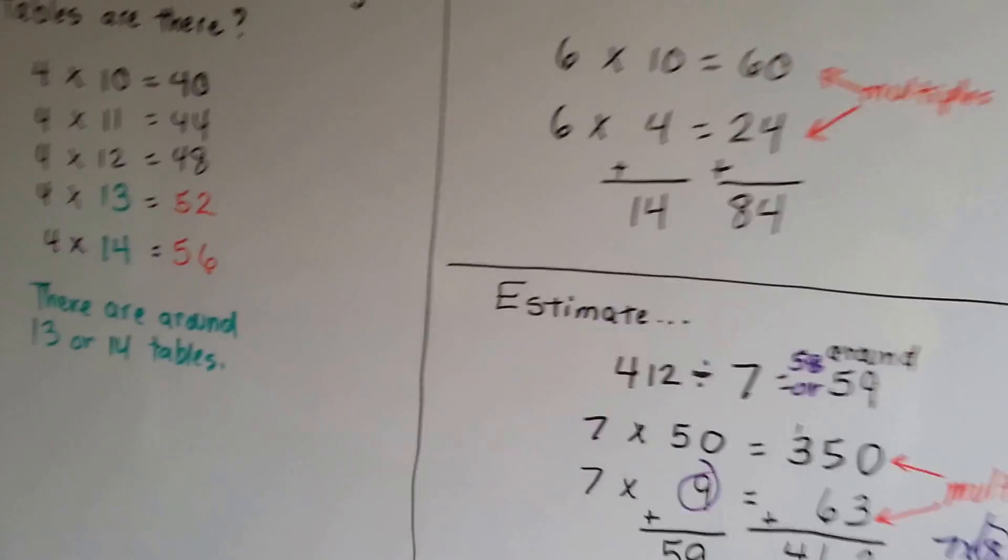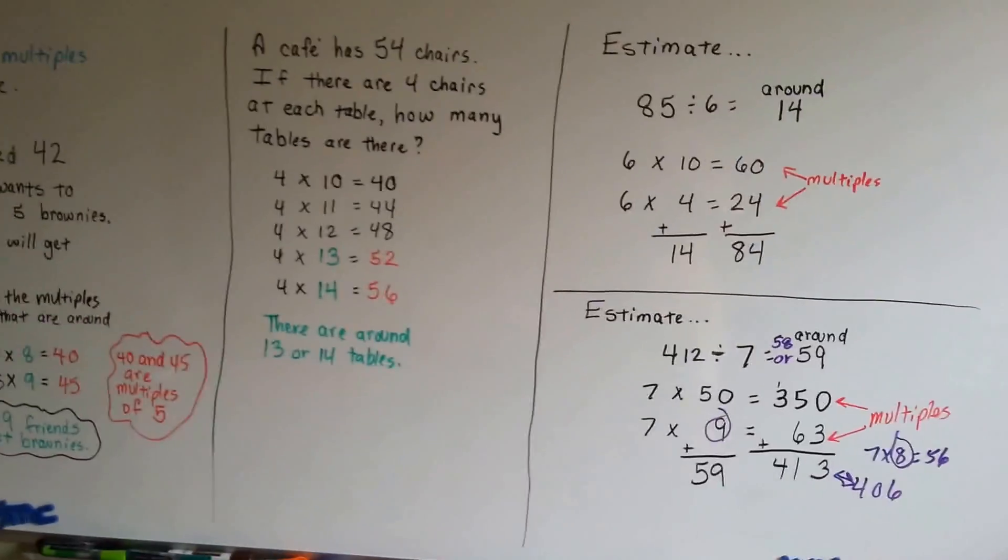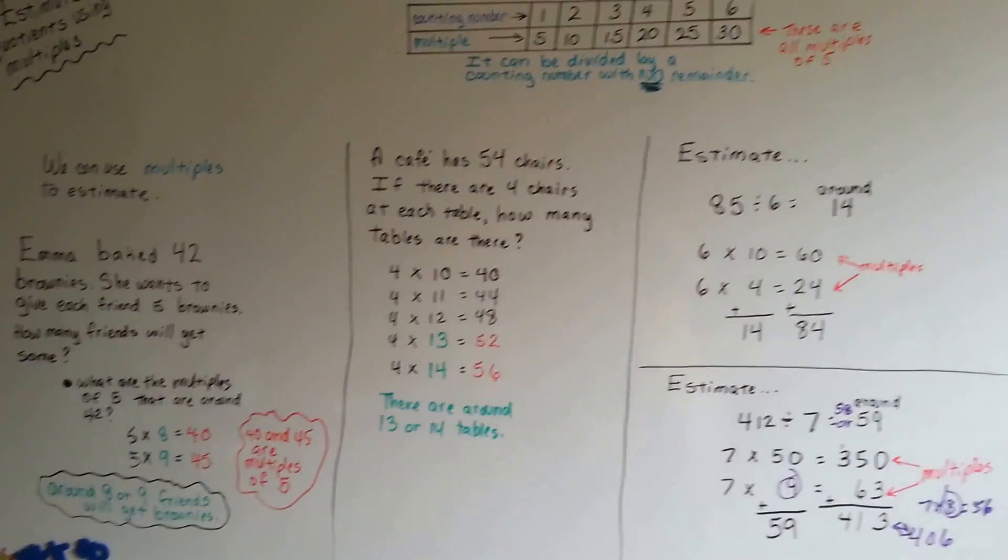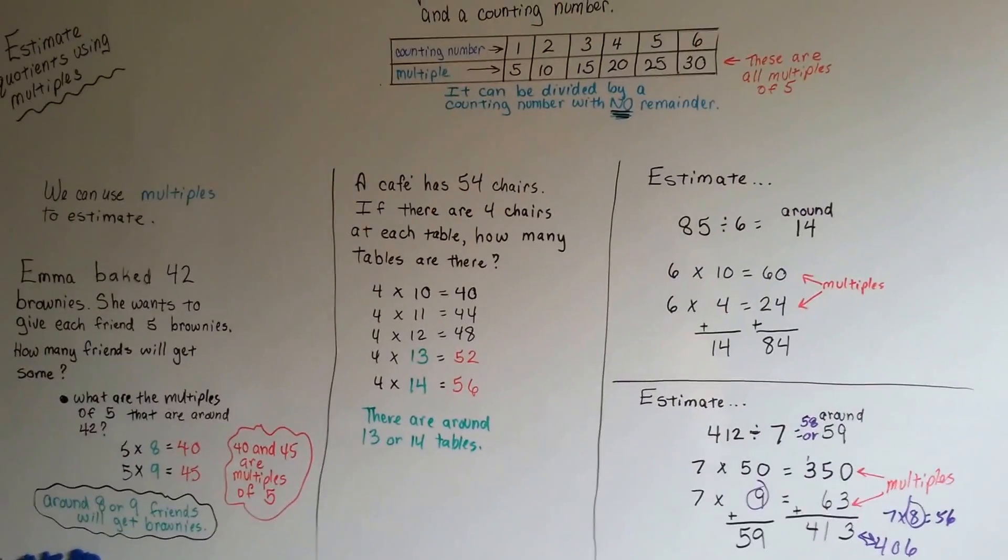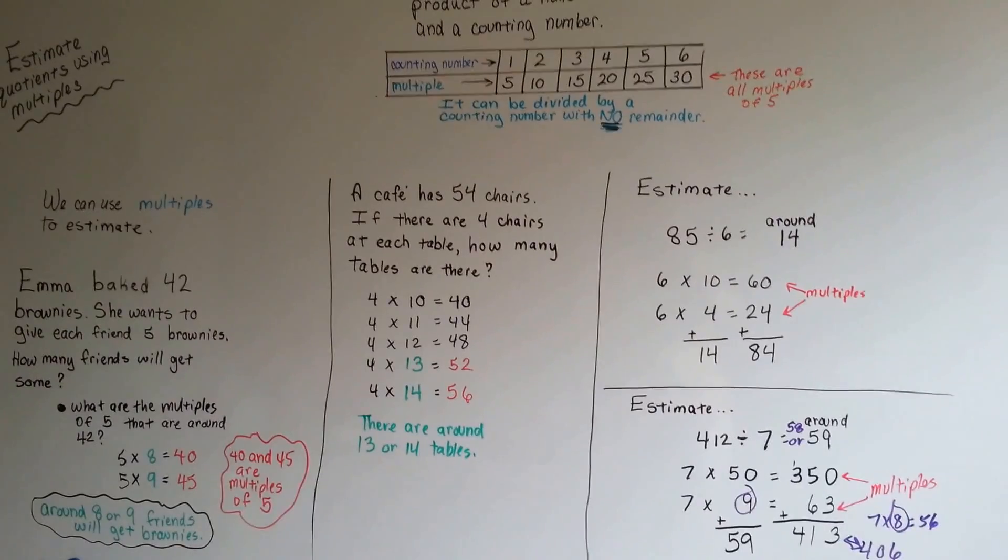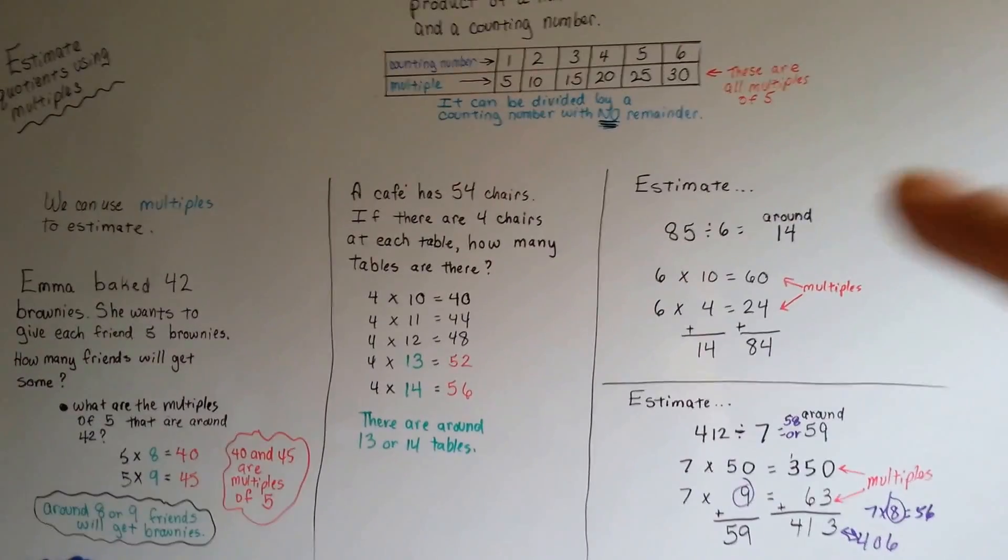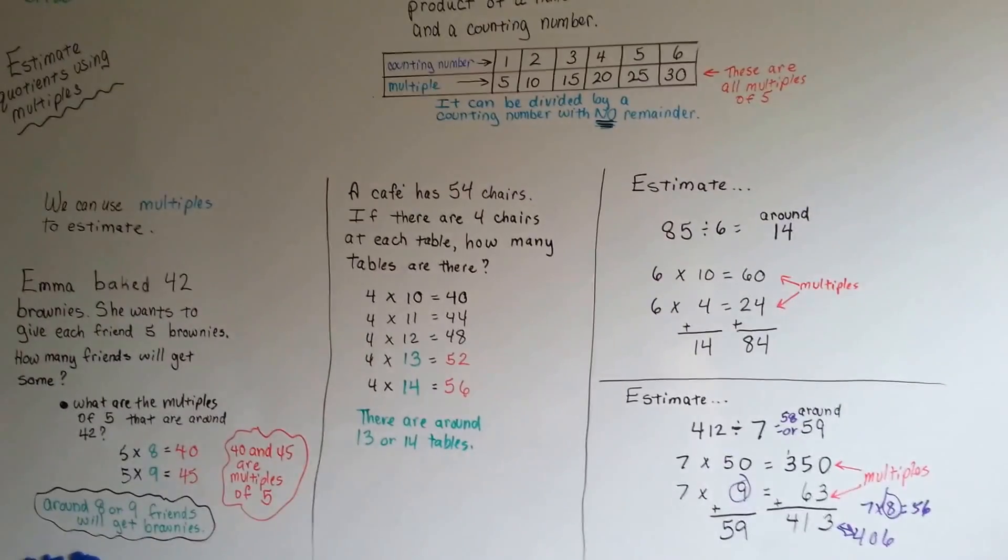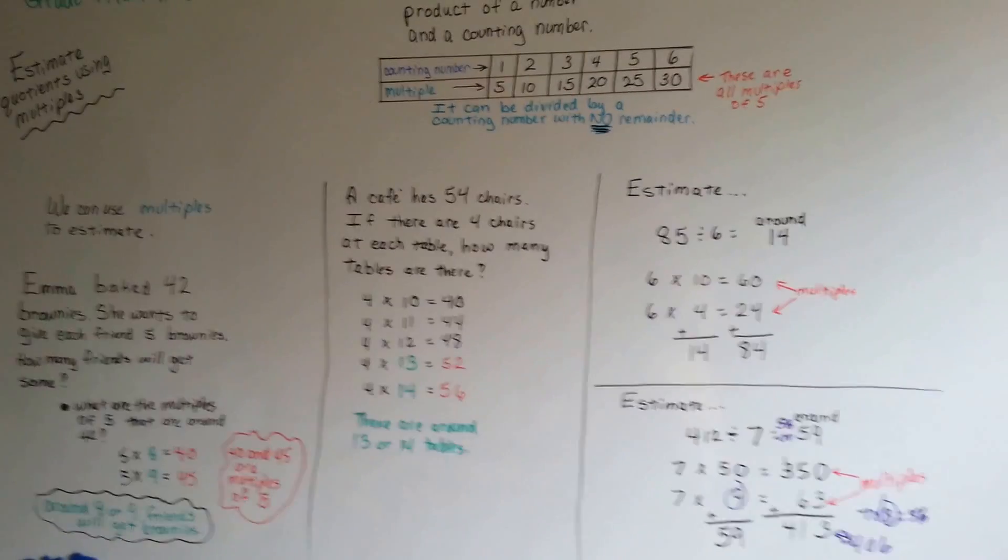So, that's what a multiple is, and that's how you do estimates using the multiples. You just get as close as you can with the number before it and the number after it, and see which one makes the most sense, and that's your estimate.